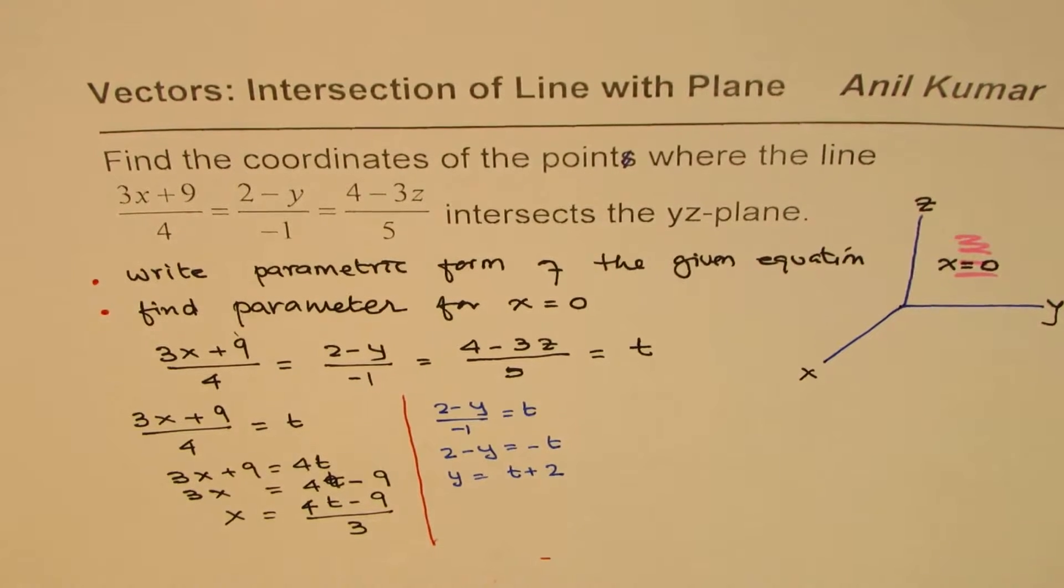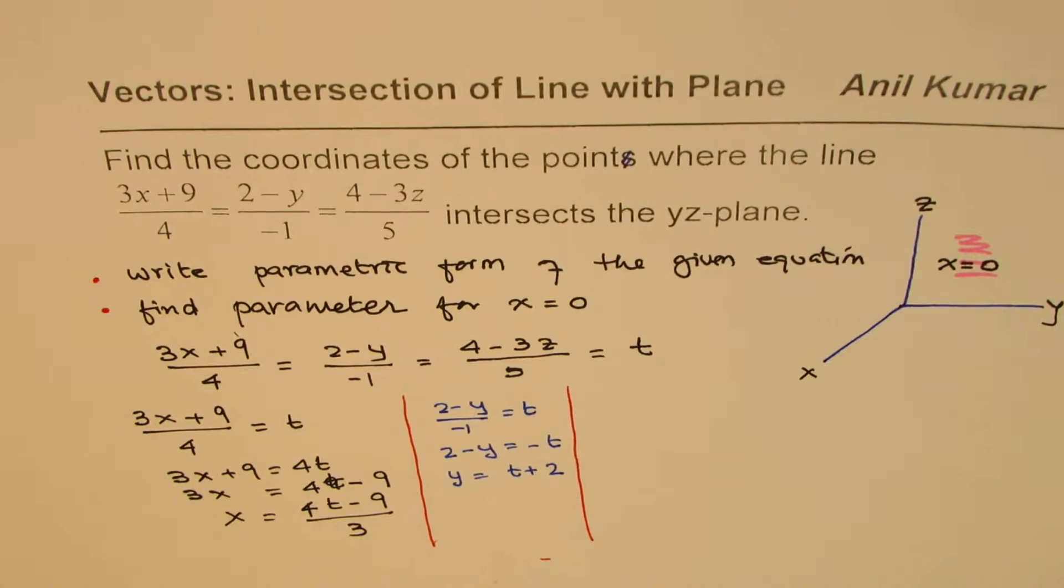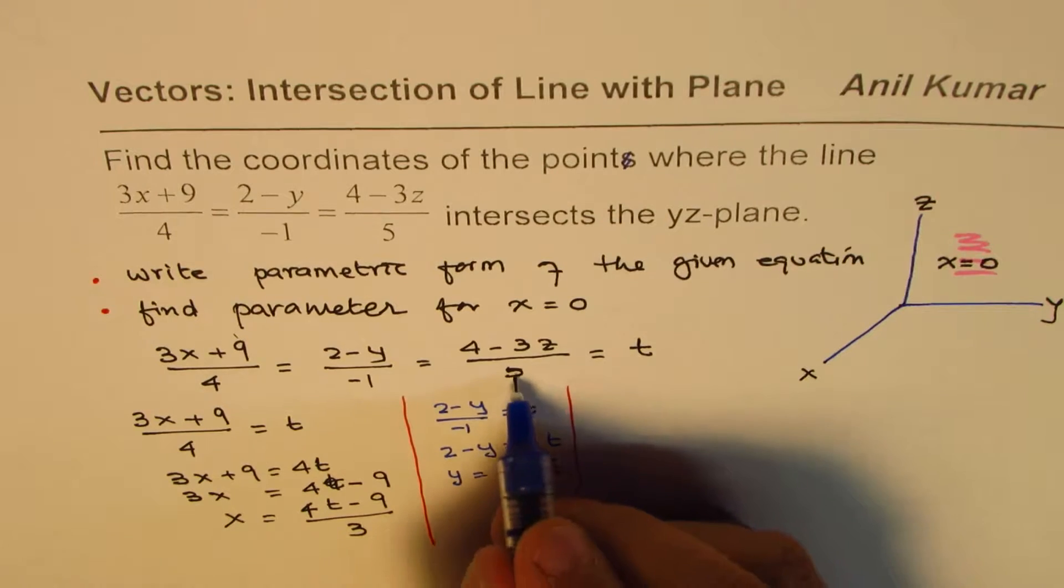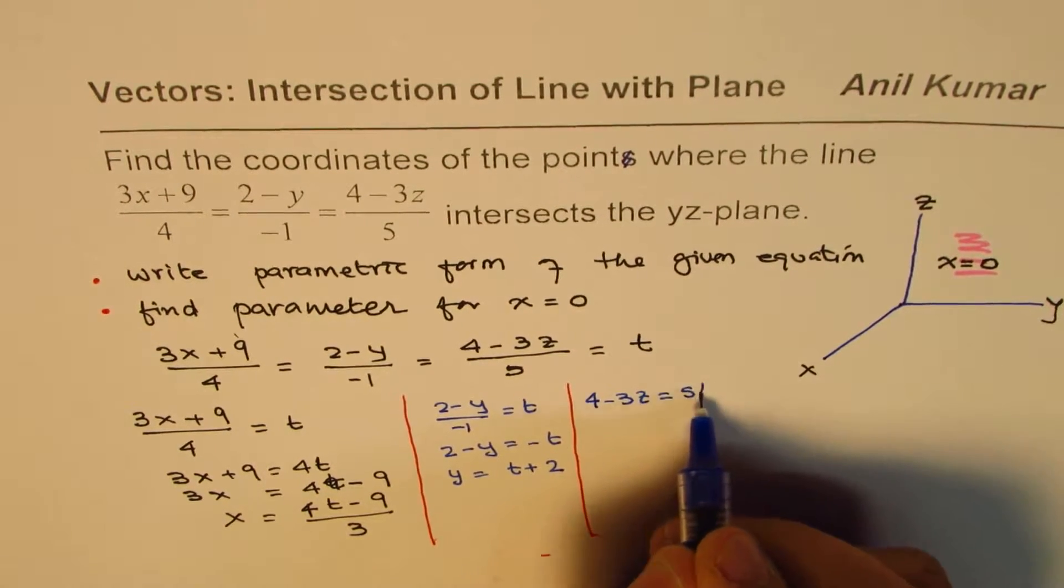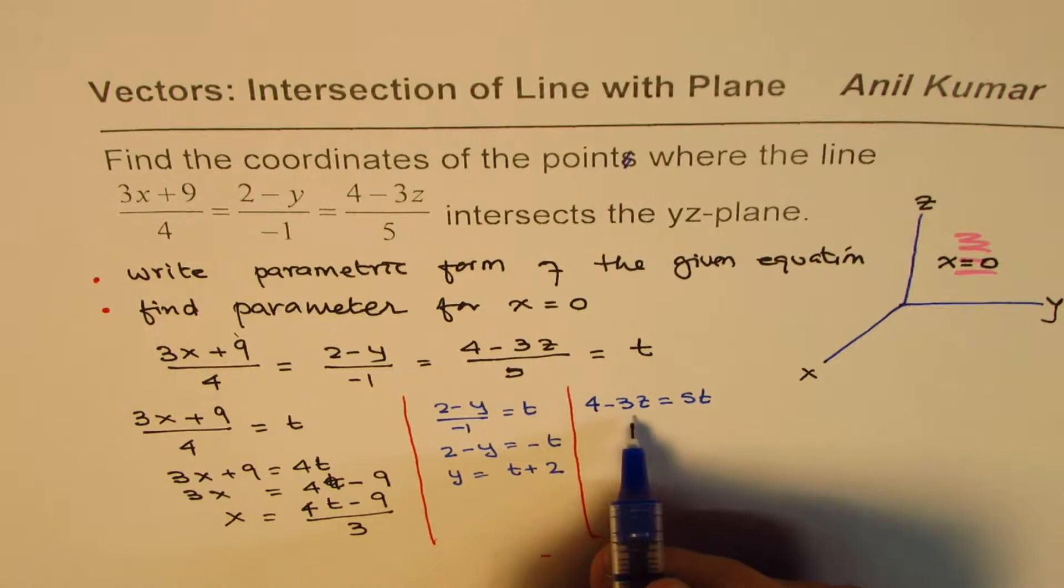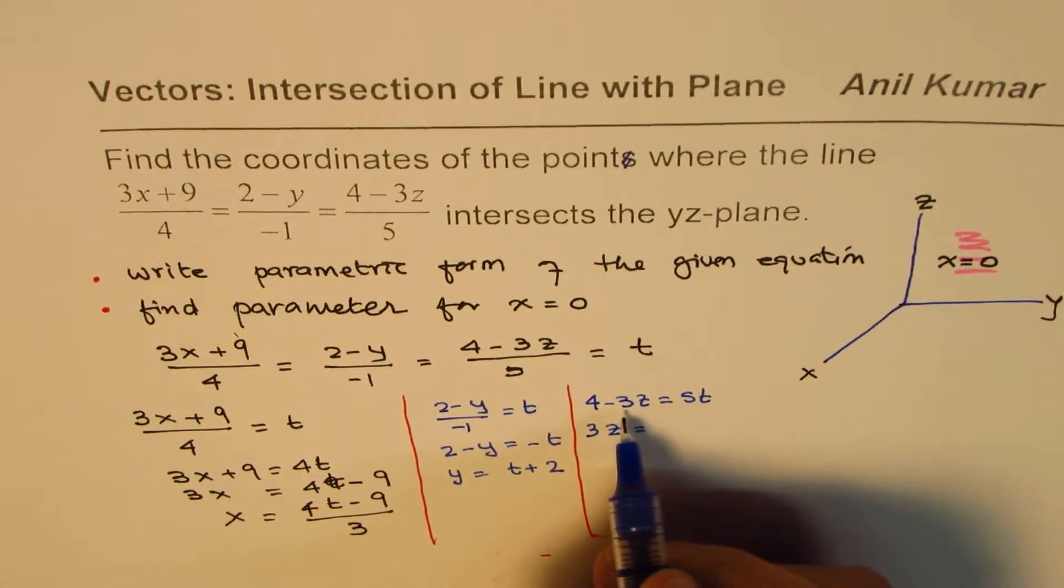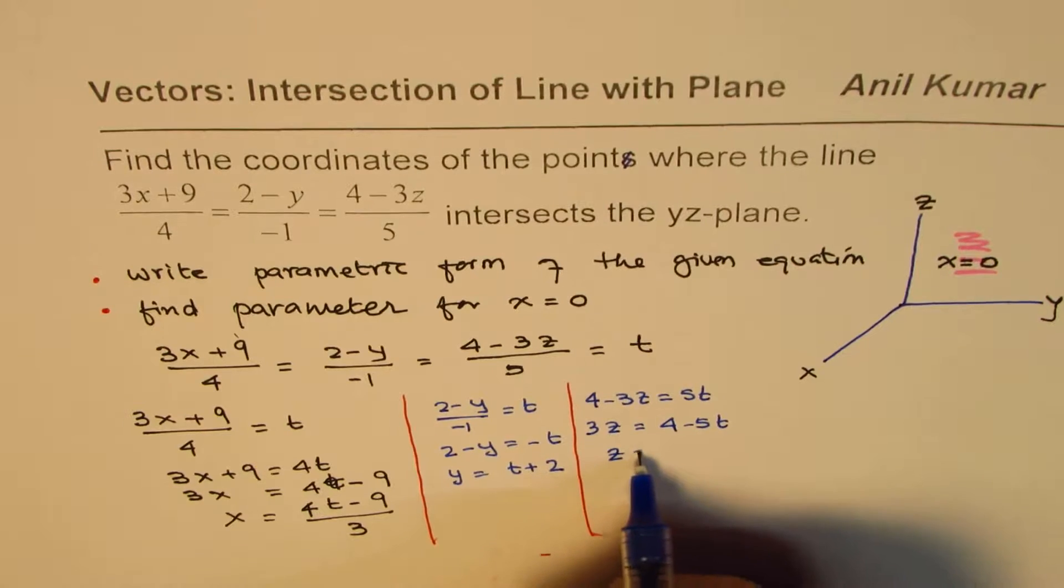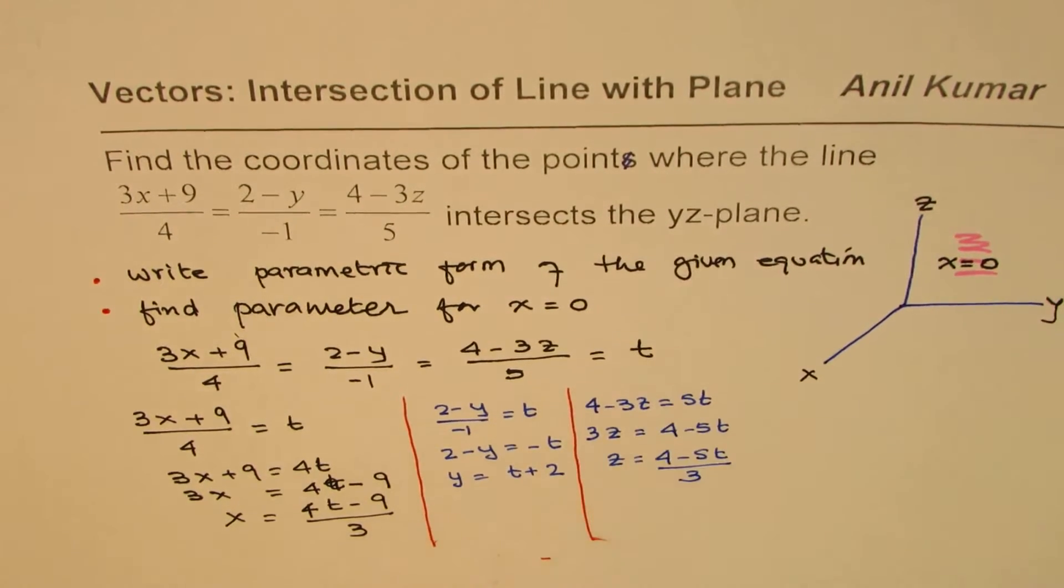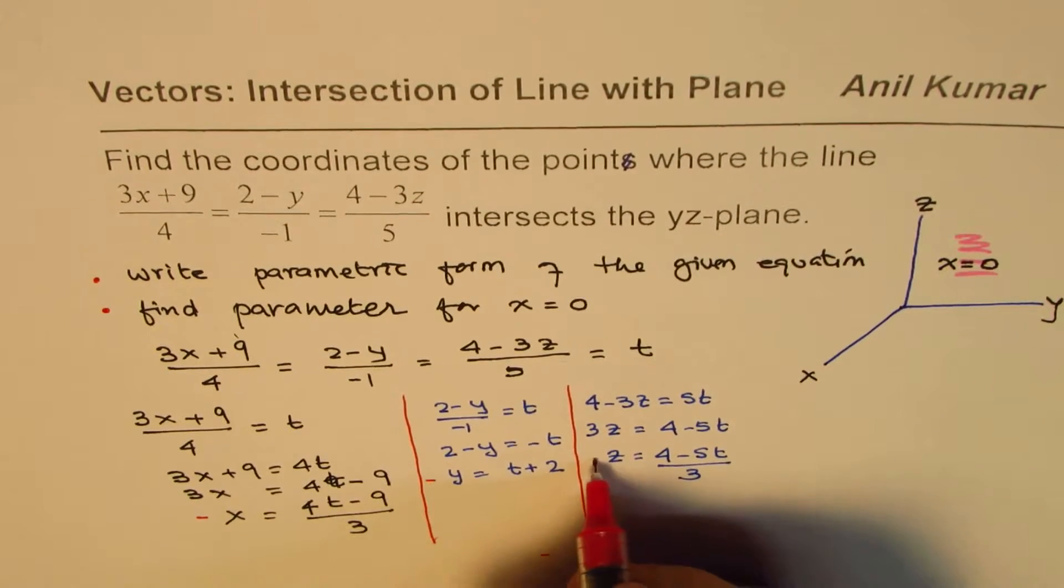We'll cross multiply so we have 4-3z = 5t and bringing z to this side so we get 3z = 4-5t or z = (4-5t)/3. That becomes the parametric form. This is for x, this is for y, and that is for z.